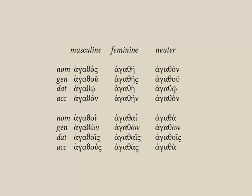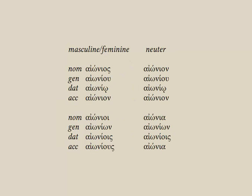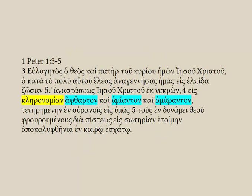Contrast that two-termination paradigm with this three-termination paradigm where you have a separate ending for the feminine. You see here it has eta all the way through the singular, and some of these adjectives have alpha all the way through the singular. All of these adjectives — both the two-termination and the three-termination — have no new endings; they're the same endings we've seen for our core pattern. The only issue is that when one of these two-termination adjectives modifies a feminine noun, it's going to use the form that looks like it's masculine. And so that's what's going on here in our passage from 1st Peter.